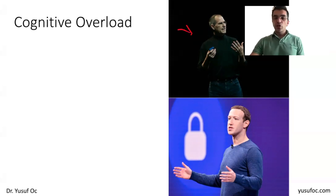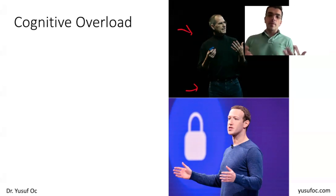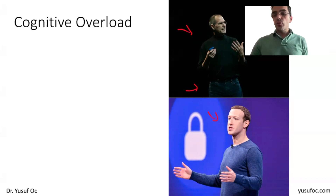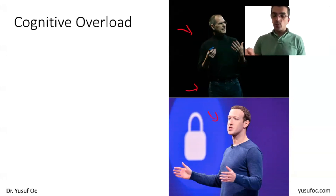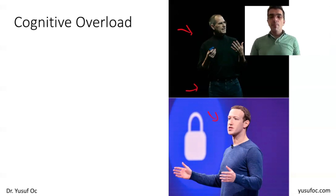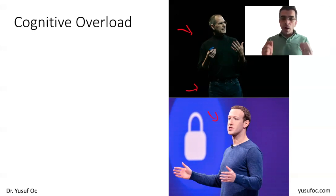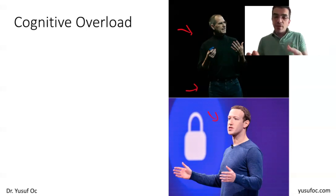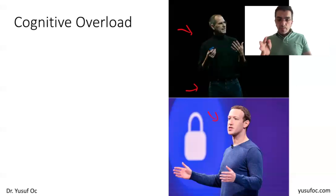I'm sure you know why Steve Jobs always wore that turtleneck jumper and blue jeans at product launch conferences. Zuckerberg does something similar — he wears colors in line with the Meta brand logo. Why do they do this instead of having fashion advisors and designer clothes? Because they don't want to use their cognitive resources on simple choices like what to wear.